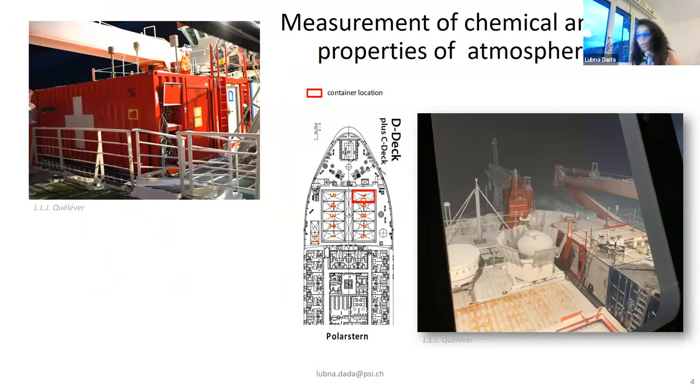So my colleagues on the boat have experienced what is called a warm and moist air mass intrusion. In the middle of the figure that you see here is the 15th and 16th of April 2020, where the temperature has increased by 30 degrees in less than 48 hours. And this was actually very scary. So the background is the normal Arctic background, so the normal that is expected for April.